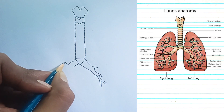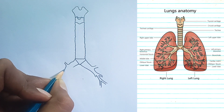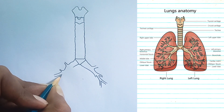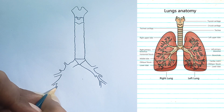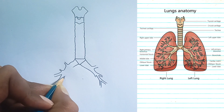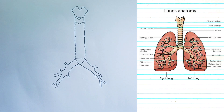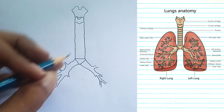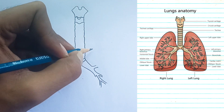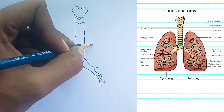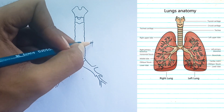Horizontal fissure: separates the upper and middle lobes. Oblique fissure: separates the middle and lower lobes. Right primary bronchus: the main airway branching off the trachea into the right lung.